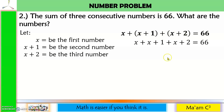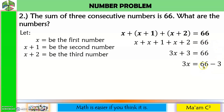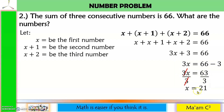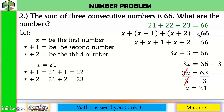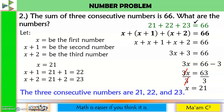Remove the parentheses and combine like terms: X plus X plus X is 3X, and 1 plus 2 is 3, giving 3X plus 3 equals 66. Move 3 to the other side: 66 minus 3 is 63. Divide both sides by 3: X equals 21 (first number). X plus 1 equals 22 (second number), and X plus 2 equals 23 (third number). Checking: 21 plus 22 plus 23 equals 66. Therefore, the three consecutive numbers are 21, 22, and 23.